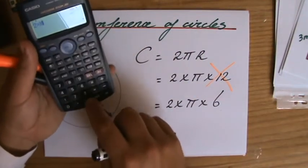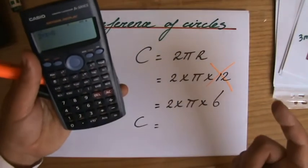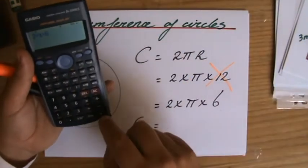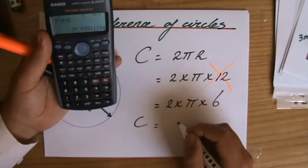Okay, 2 times π times 6. And now I grab my calculator. I've written it all down. Equals, and that equals to